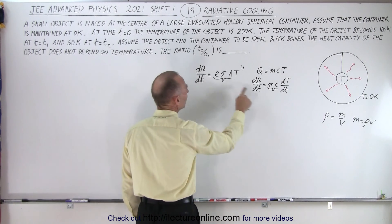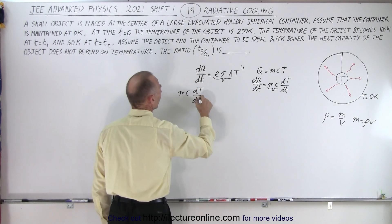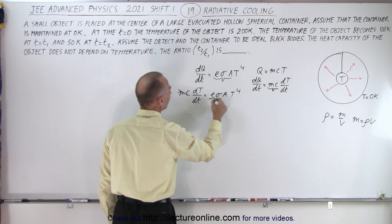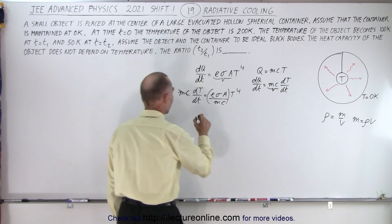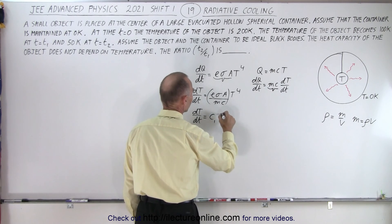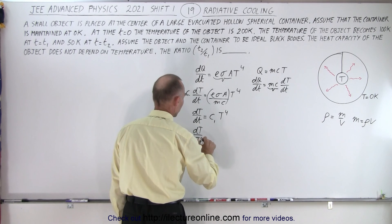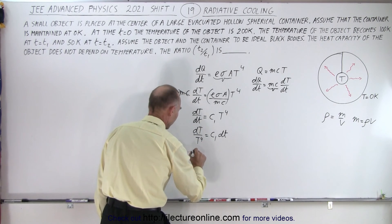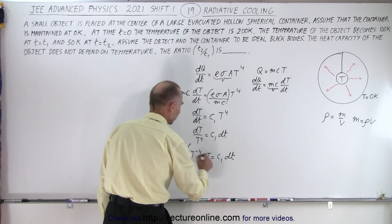We replace dQ/dt with mc(dT/dt), so mc(dT/dt) = εσAT⁴. Dividing both sides by mc gives dT/dt = c₁T⁴, where c₁ is a constant. Rearranging: dT/T⁴ = c₁dt, or T⁻⁴dT = c₁dt. Now we can integrate both sides.